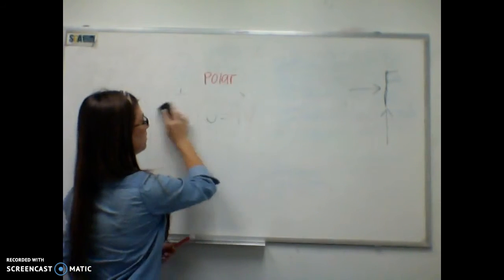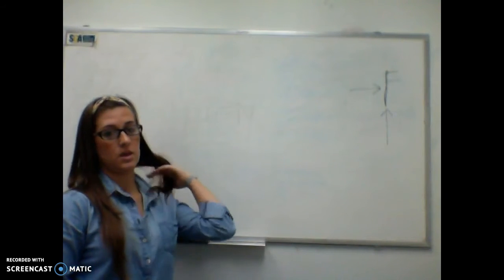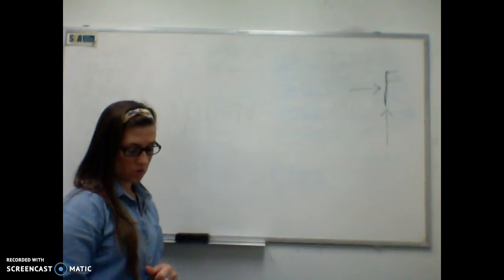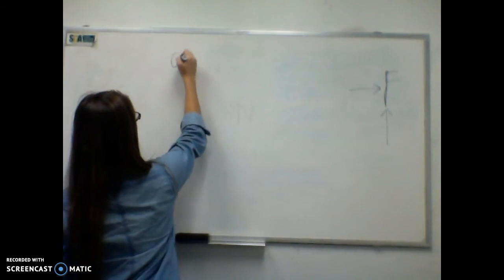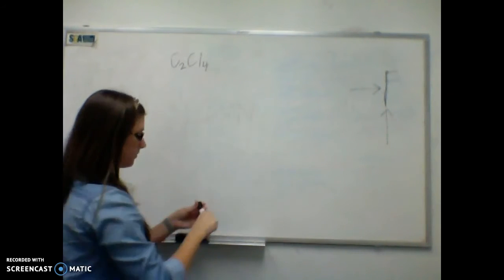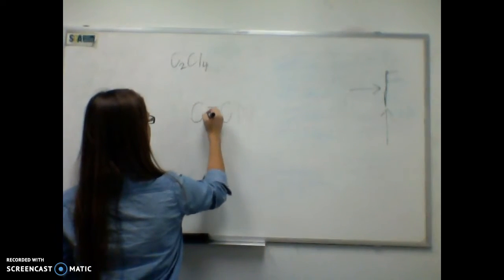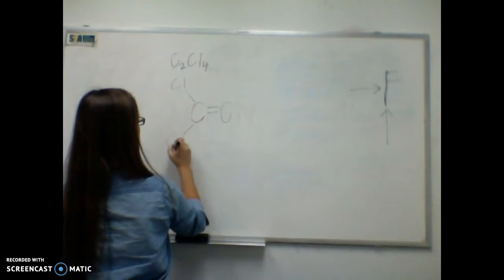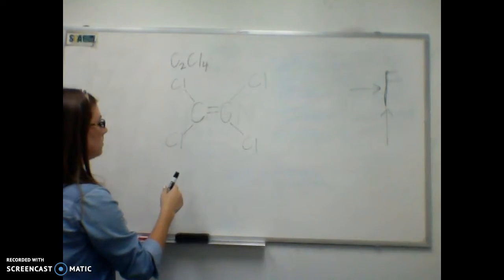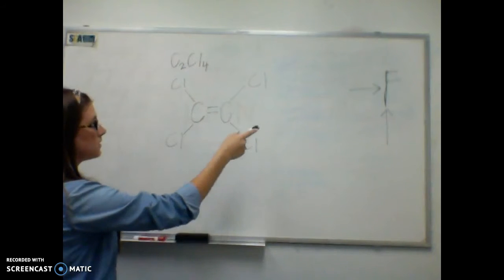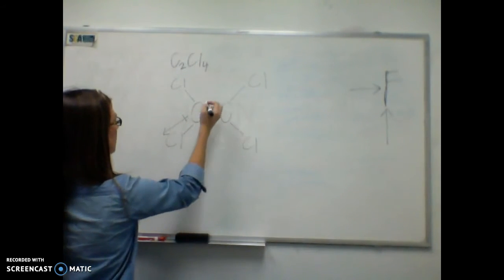Now I'm going to show you a case where there's no net molecular dipole moment, and that means the molecule is non-polar. We can use C₂Cl₄. We know that chlorine is going to be closer to fluorine than carbon, so all of the arrows are going to be pointing outward like this.